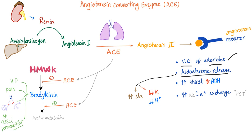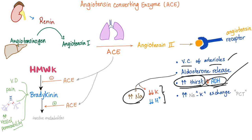Angiotensin-2 also causes aldosterone release, reabsorbing sodium, secreting potassium, and secreting hydrogen ions, increases thirst, and ADH — this is very important — and increases sodium-potassium exchange at the proximal tubule.